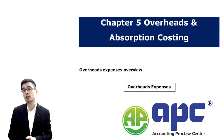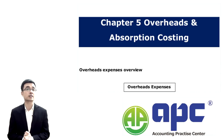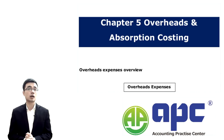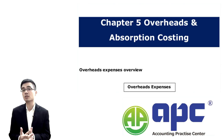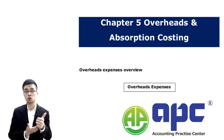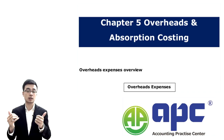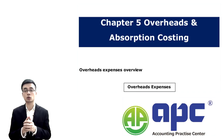As mentioned in the last chapter on cost classification, we can classify costs using the traceability method. The total cost of a product will include the prime cost — which means the total direct cost — plus the overhead expenses, which means the total indirect cost.